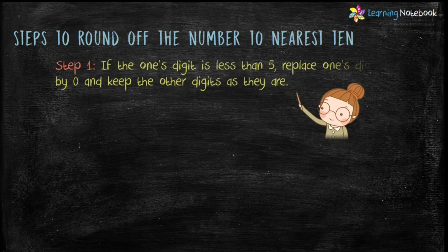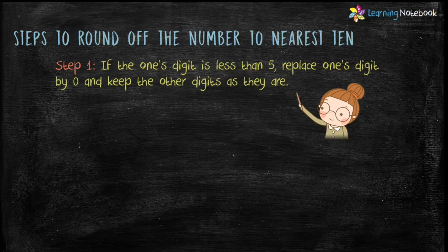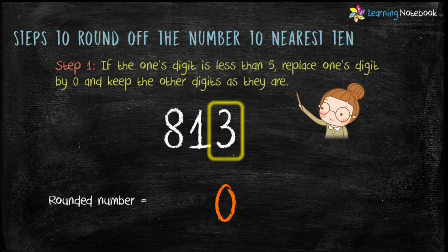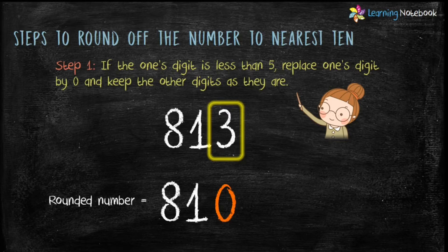Let's see the steps to round off a number to the nearest ten. Step 1: if the one's digit is less than 5, replace the one's digit by 0 and keep the other digits as they are. For example, 813 — here the one's digit is 3, which is less than 5. Therefore replace 3 by 0 and keep the other digits as they are. The rounded number is 810.